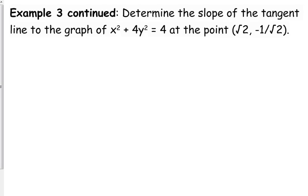So the derivative of x² + 4y² equals 4. The derivative of x² is 2x. The derivative of 4y² is 8yy prime. The derivative of 4 is 0. So a much smaller derivative here.